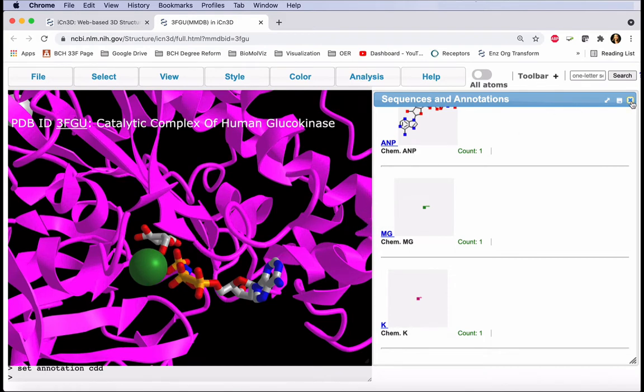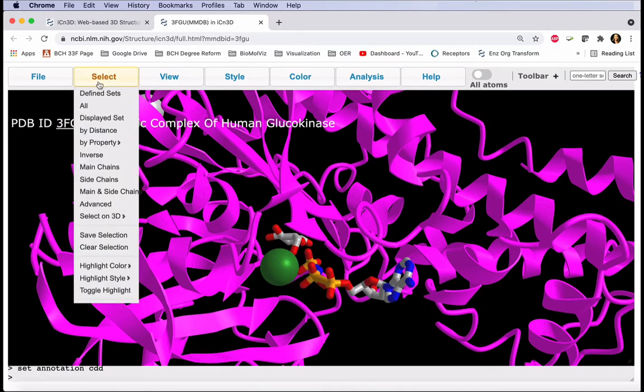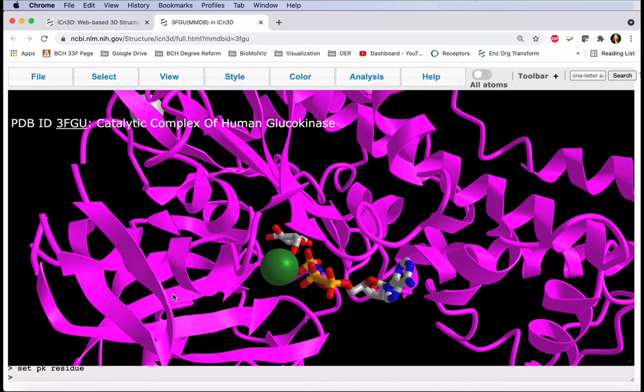Now we can close the sequences and annotations window and select on our structure. Select, select on 3D, and here are the instructions for doing this. This is for a PC. Alt will actually be option on a Mac. Ensure that residue is selected.